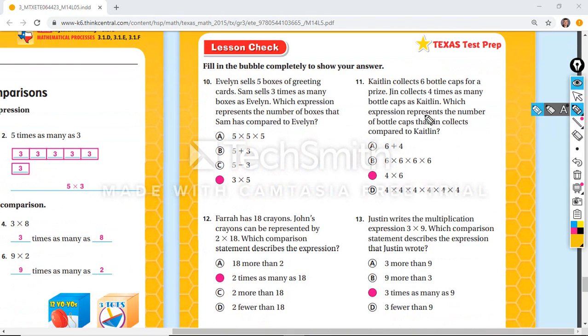Evelyn sells five boxes of greeting cards. Sam sells three times as many as Evelyn. Which expression? He sells three times as many as Evelyn. Three times five. And look at these. Addition, subtraction, and then this is not even close.